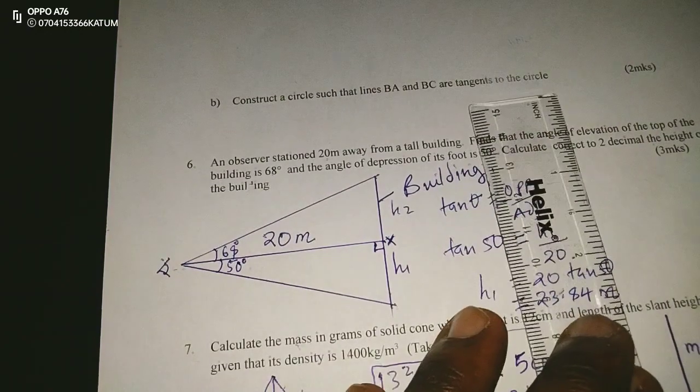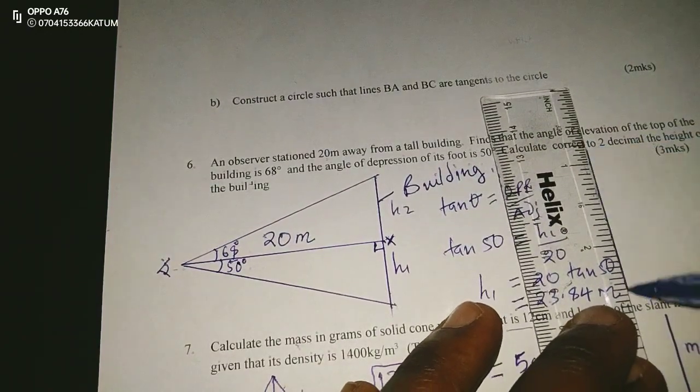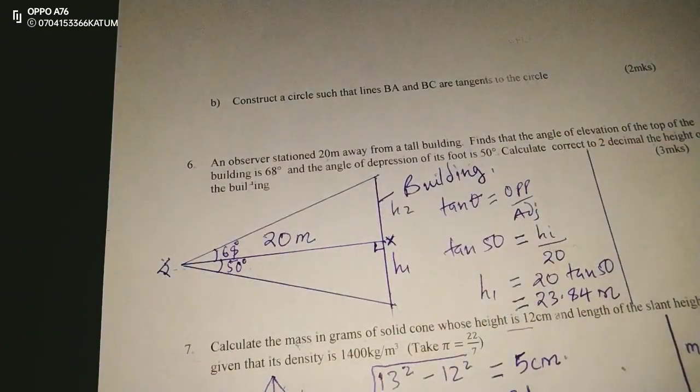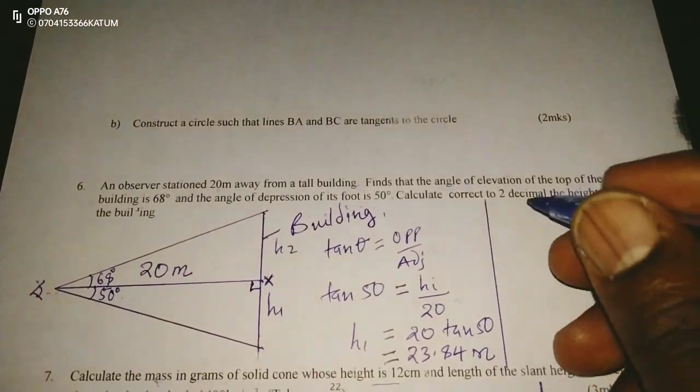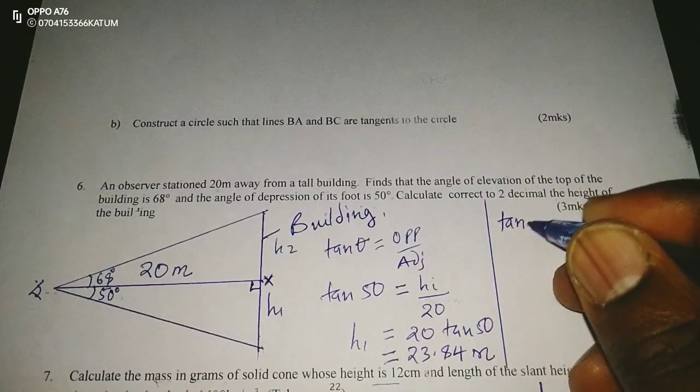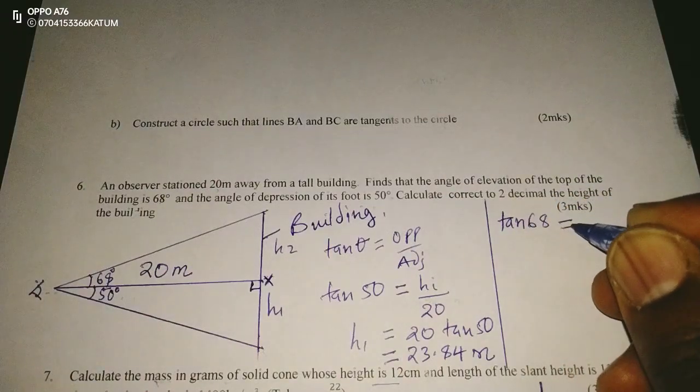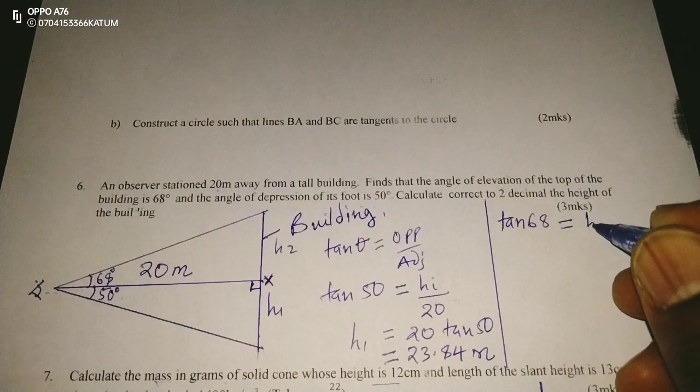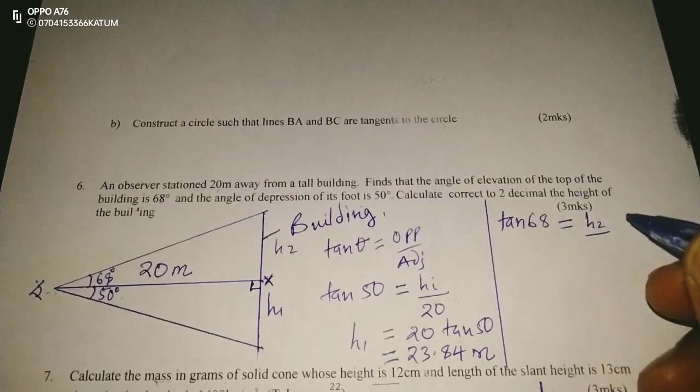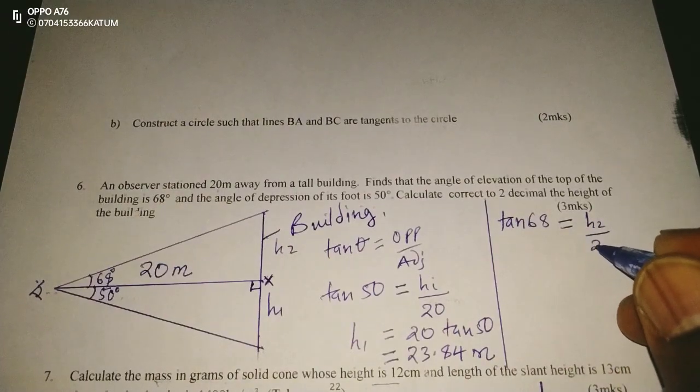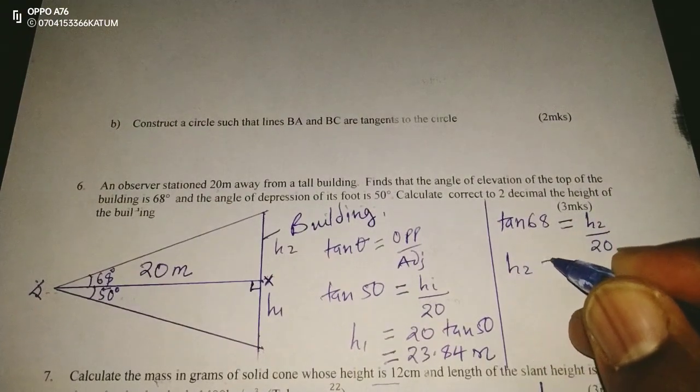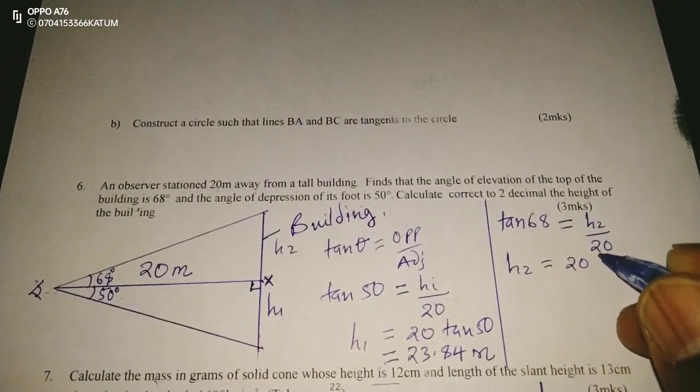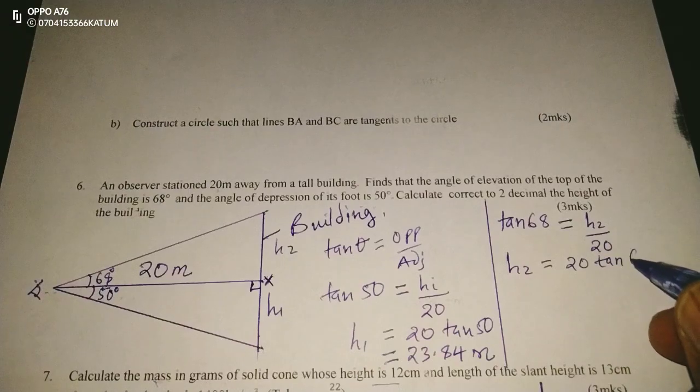Then, we can also calculate H2 by applying the same trigonometric ratio, and that is tangent. So, we will talk of the tangent of 68 being given by opposite length H2 out of the adjacent length 20. So, for us to get H2, we need 20 tan 68.